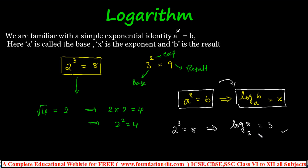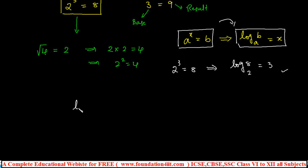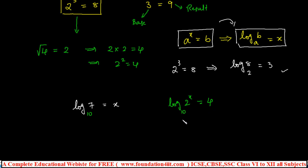If no base is given in a logarithm, then 10 is the default base. For example, log 7 means log 7 to the base 10. If no base is specifically mentioned, assume the base is 10. So log of 2 to the power x equals 4 with no base given means base 10 is assumed.